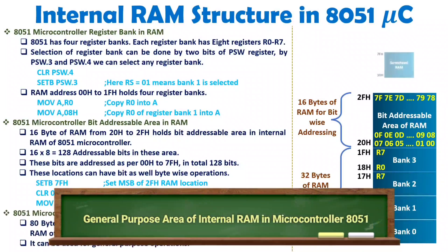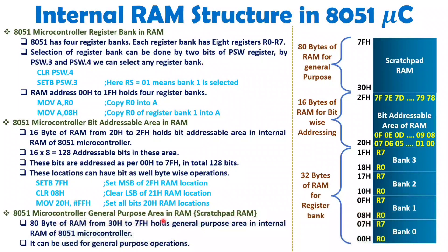The third category is the general purpose area in RAM, also referred to as scratch pad RAM, from 30h to 7Fh — 80 bytes in total for general purpose use. The programmer must decide how to use this area; things do not happen automatically. Using push and pop instructions, as well as in call subroutines and ISRs, this area can be utilized.